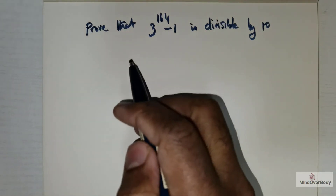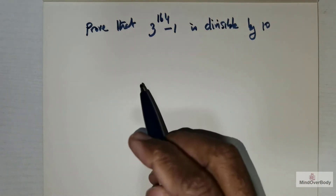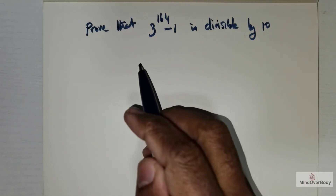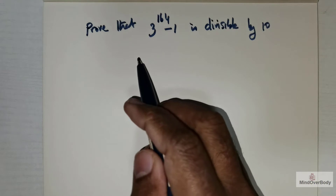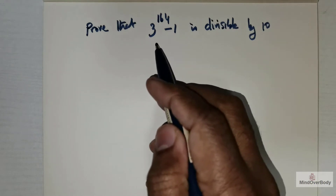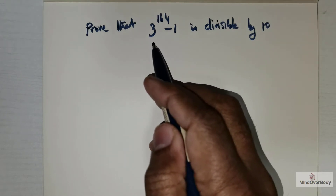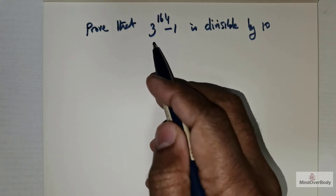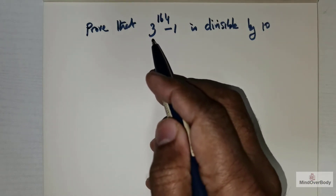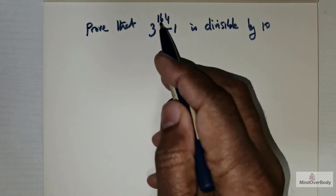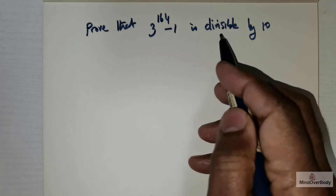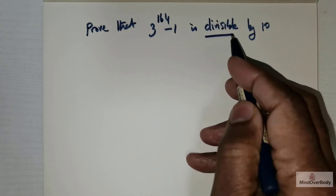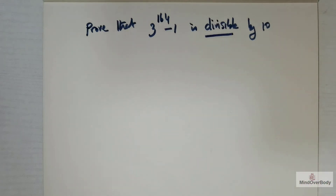Welcome students. In this question we have a number theory problem. The question wants you to prove that 3 raised to the power of 164 minus 1 is divisible by 10.